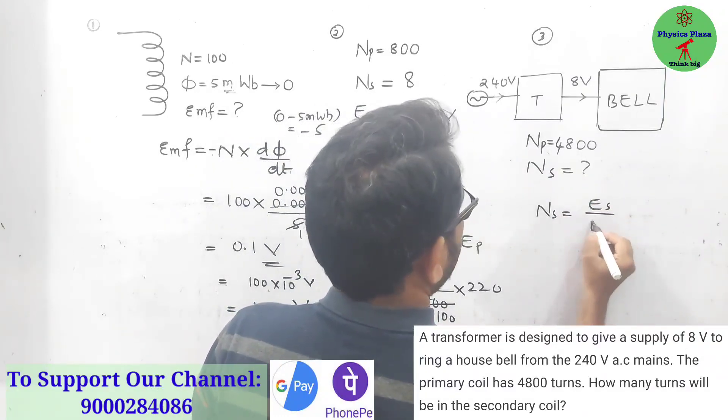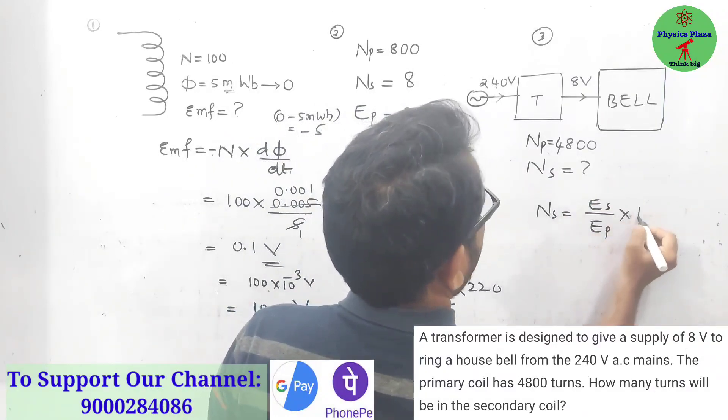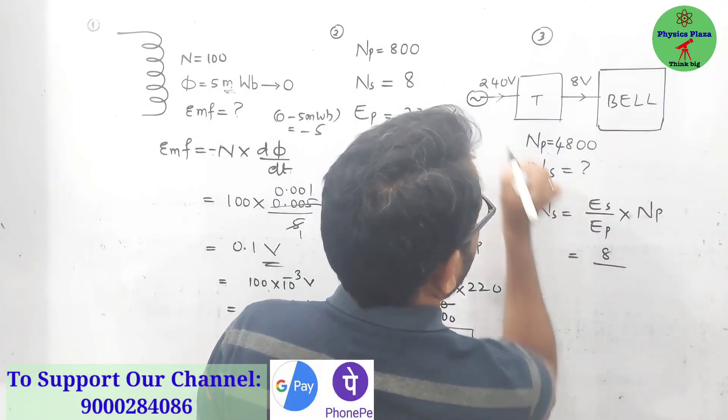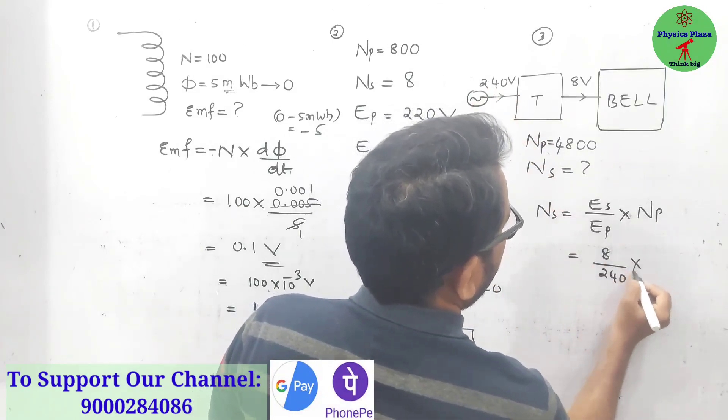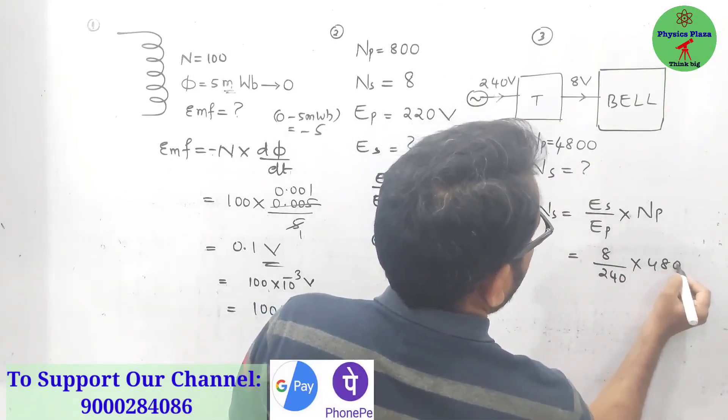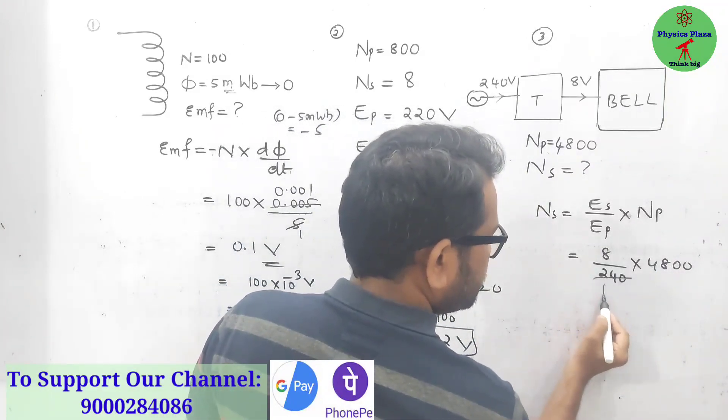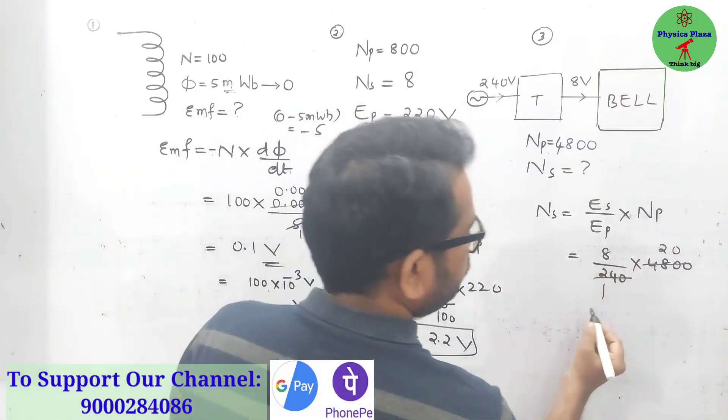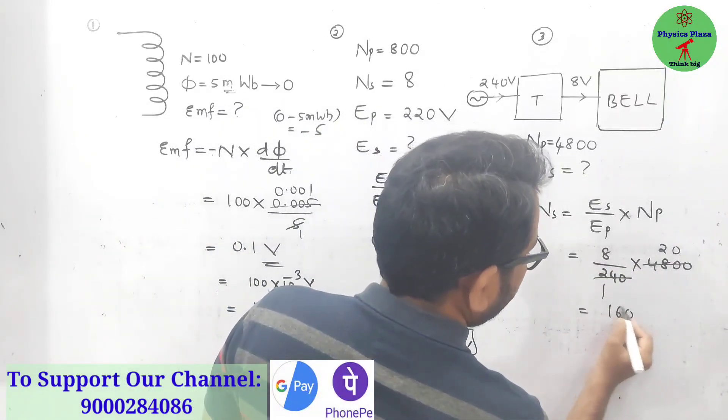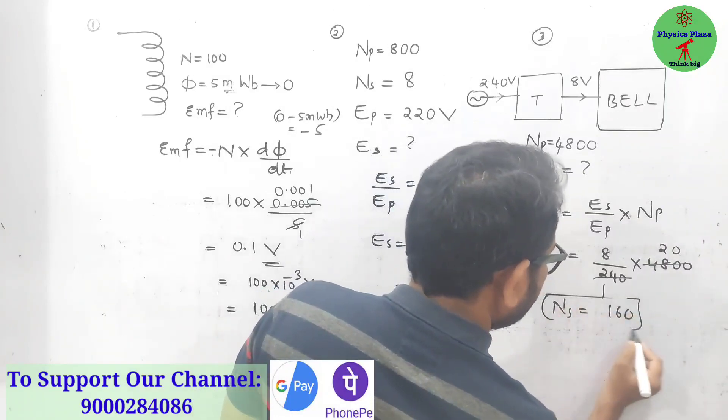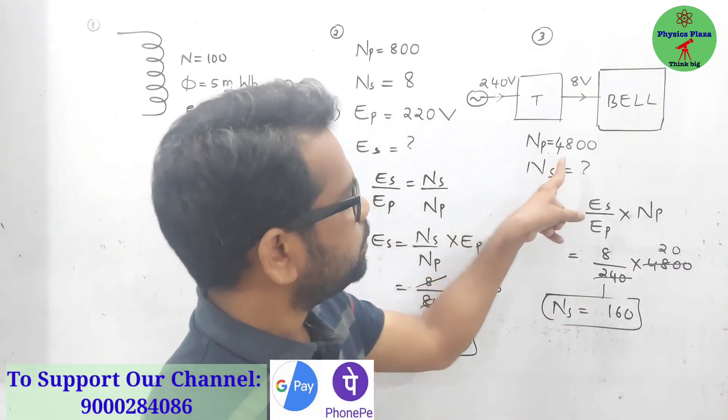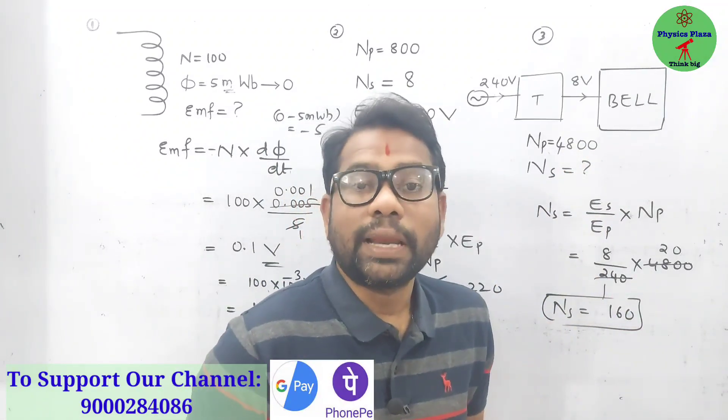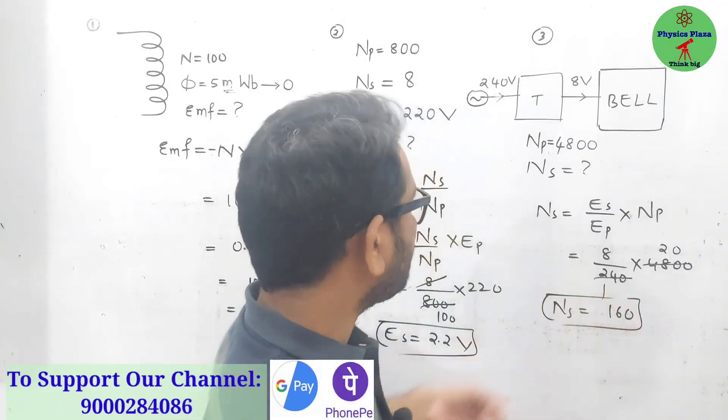Again same formula we have to use, but we have to collect Ns value. So Ns = Es/Ep × Np. Secondary is 8 by primary 240 into 4800. 240 into 20 is 4800, so 8 into 20 is 160. Number of turns in the secondary coil is 160. The number of turns in primary coil is 4800, in the secondary coil should be less, so then only it acts like a step-down transformer.